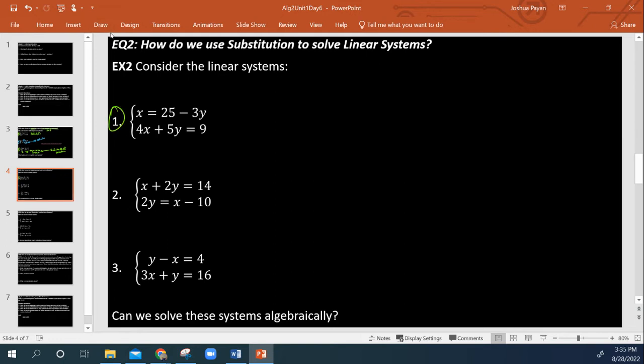So this method right here to solve - if we can't graph or for whatever reason we just don't feel like it, and trust me, we need to know how to do this either way - we need to be able to solve these using algebra. And the first algebraic method would be substitution. And all we're going to do is literally what it implies, we're going to substitute. So this system here, for example, we have X equals 25 minus 3Y. So we know what X is. X is 25 minus 3Y. So that means we can plug this in right here, in this other equation. We can substitute. So that's exactly what I'm going to do. 4 times X, which is 25 minus 3Y, plus 5Y equals 9.